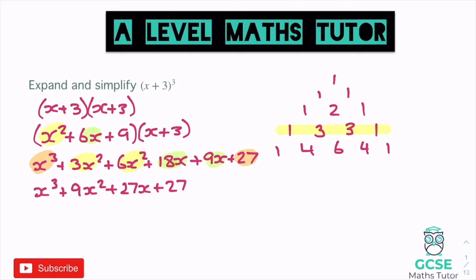We don't want to always draw Pascal's triangle out. Thankfully there's a nice little button we can use on the calculator — it's a calculator topic. The button looks like nCr, and it tends to be that you press shift first to get there. It's normally behind the divide button, so you press shift divide to get nCr. For a power of three, you press 3, shift nCr, then 0 for the first one: 3C0 always gives a value of one.